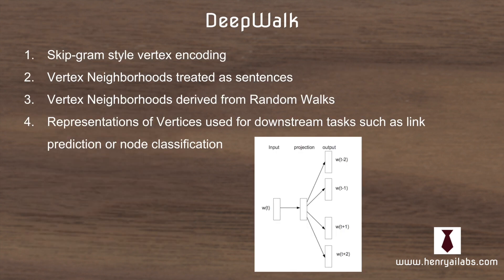So DeepWalk uses a skipgram style vertex encoding. This is done by treating vertex neighborhoods as sentences and deriving vertex neighborhoods from random walks. And then the representations of these vertices are used for downstream tasks like link prediction or node classification.